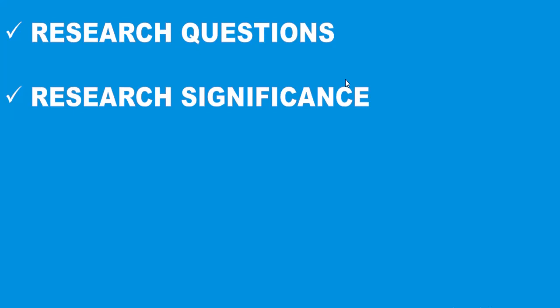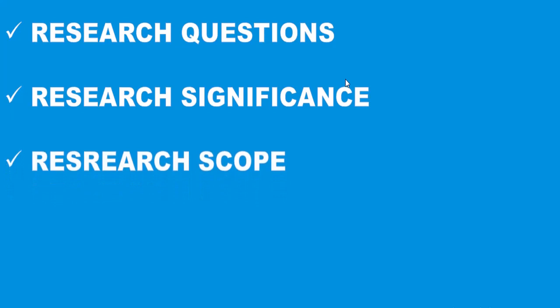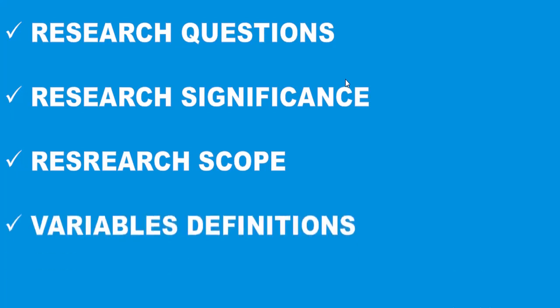You write what benefit these five groups will get from your research — in simple words, you write the benefits which people will get from your study. Next is research scope, where you tell the parameters of your study and your variables. Finally, variable definitions also come under your introduction chapter, where you write the definitions of the variables you have used in your study.